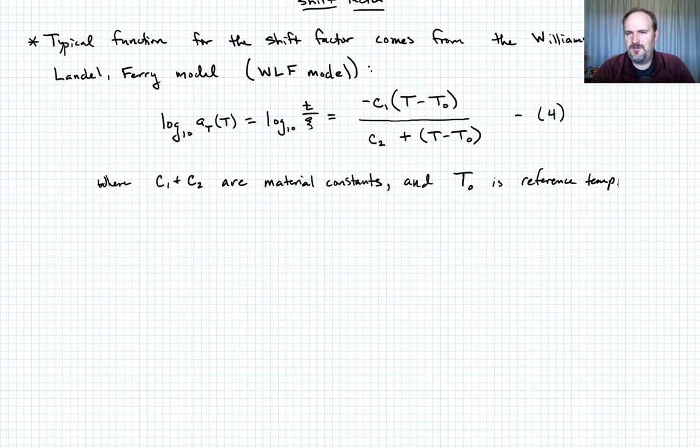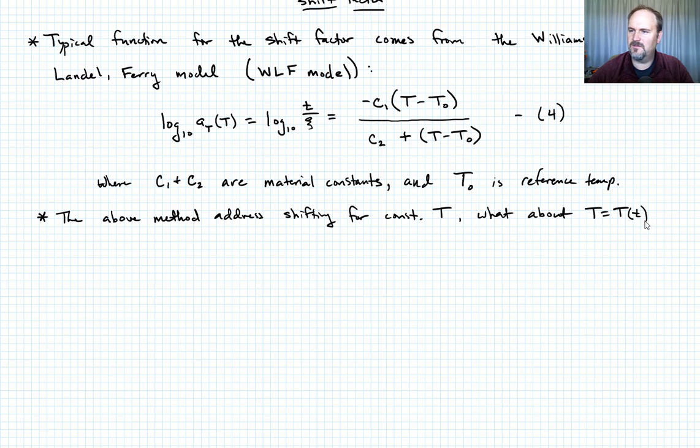So that actually completed our answer to the first challenge. So if we have a different temperature that we're applying our material in, but we have a characterization at some reference temperature, we can adapt our viscoelastic prediction for that temperature using this methodology. It didn't answer the second challenge, which is what happens when the temperature itself is changing in time. So the above method addresses shifting for a constant temperature. What about when the temperature is a function of time itself?